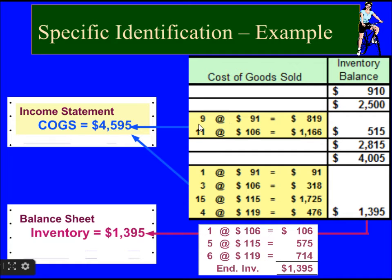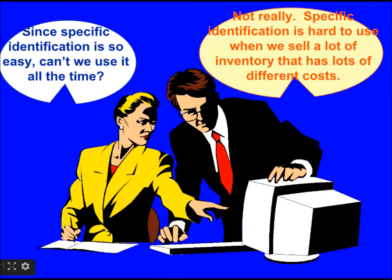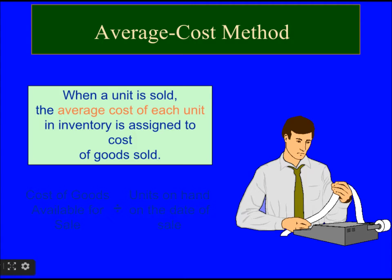In this example, 9 units that actually cost $91 and 11 units that actually cost $106 were identified for each item sold. Specific identification is good but if there are too many items it becomes very cumbersome. So we should look at different methods like the average cost method. When a unit is sold, the average cost of each unit in the inventory is assigned to cost of goods sold — calculated as cost of goods available for sale divided by units on hand on the date of sale.